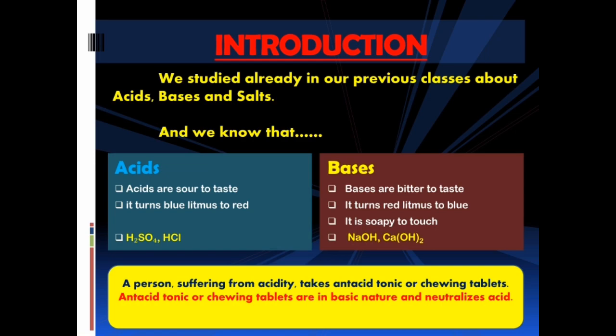We studied already in our previous classes about acids, bases and salts. We know that acids are sour to taste and turn blue litmus to red, whereas bases are bitter to taste, turn red litmus to blue, and are soapy to touch. Some examples for acids are H2SO4 and HCl. Some examples for bases are NaOH and Ca(OH)2. A person suffering from acidity takes antacid tonic or tablets, which are basic in nature and neutralize acid.